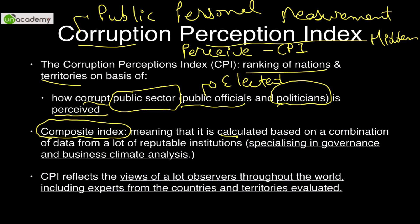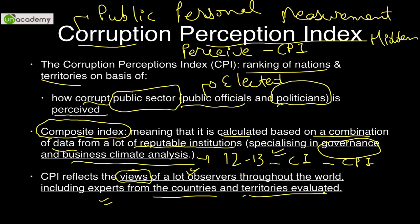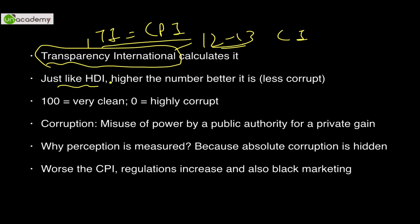CPI is a composite index, meaning it is calculated based on data from a combination of around 12 to 13 reputable institutions that specialize in governance issues and business climate analysis. These institutions send their reports, and on that basis the composite index is created. CPI reflects the views and perceptions of many observers, including experts who live in the countries and territories being evaluated. Transparency International (TI) is the body that calculates the CPI.